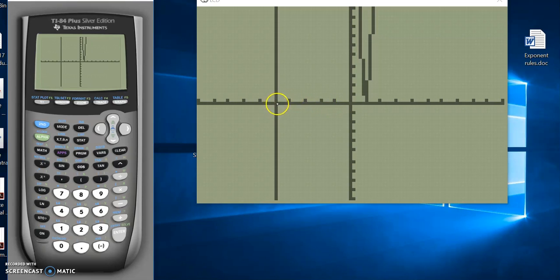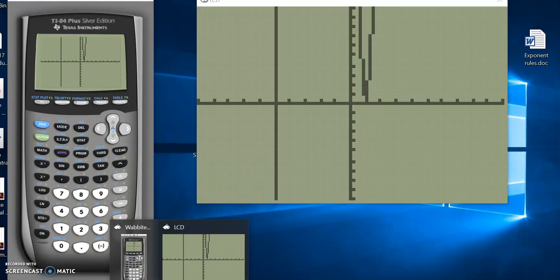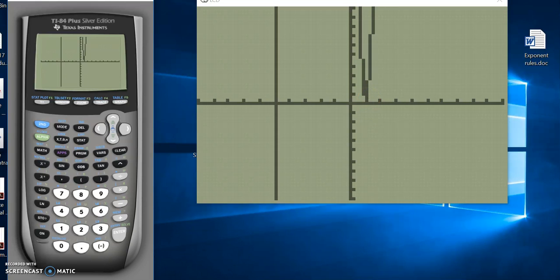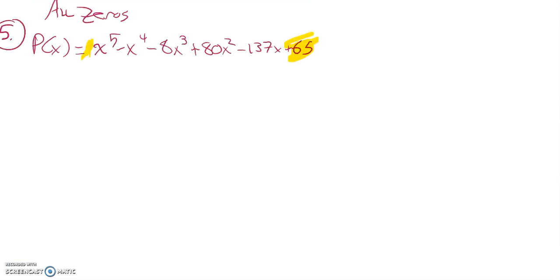Just by looking at the graph, there's probably one here at negative 5. Yeah, negative 5 goes into 65, so that makes sense. And it looks like this looks like a parabola here at 1, so it looks like a repeated root at 1. So 1 might happen twice.